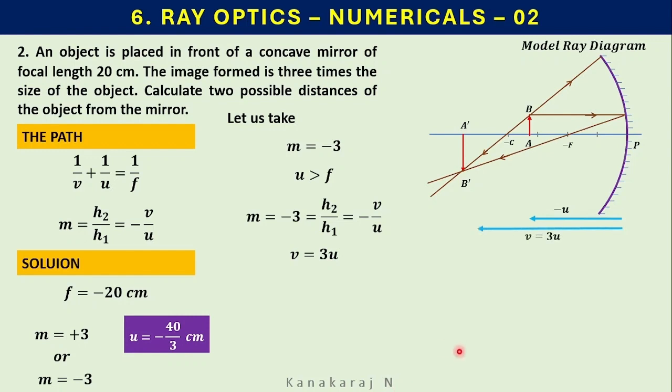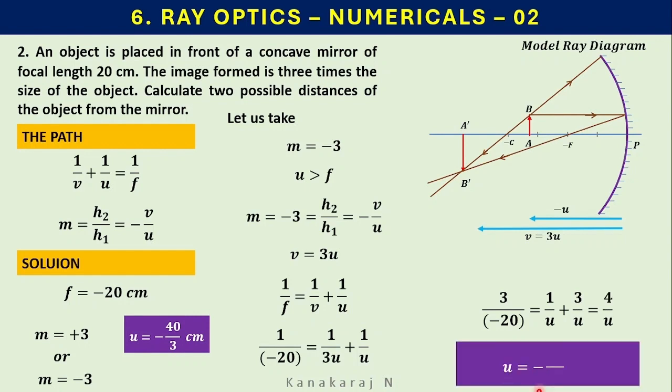But here, 3 times u, as u is negative, 3 times minus u becomes minus 3u, v is negative. 1/f equals 1/v plus 1/u. Let us substitute the value of f as minus 20 and v as 3u plus 1/u. In a simple mathematical step, multiplying throughout by 3 and simplification, we get u equals minus 80/3 centimeter.